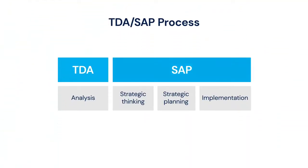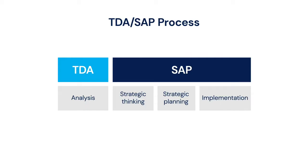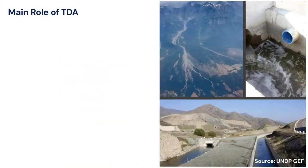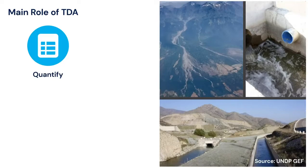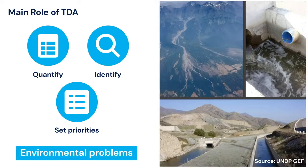The strategic action plan, on the other hand, involves more strategic thinking about how we're actually going to address those issues, what strategic planning is needed, and how we're going to implement those strategically. The main role of the TDA is to quantify, identify, and set the priorities for the environmental problems that are transboundary in nature.